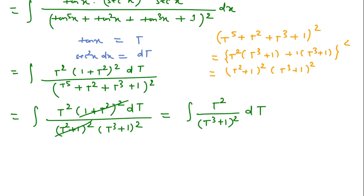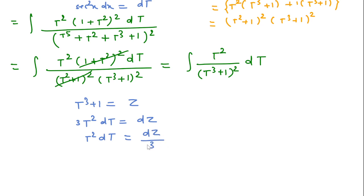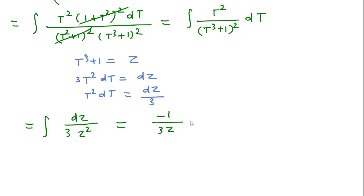Now I will consider t³ plus 1 equal to z, and if we differentiate this then we can write 3t² dt equal to dz, so t² dt equals dz over 3. In place of t² dt I can write dz over 3, and t³ plus 1 is z, so z squared. If we integrate this then this will be minus 1 over 3z plus C.